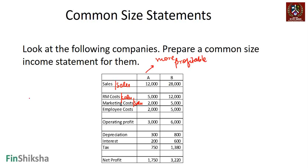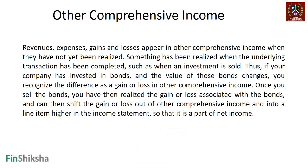All you need to do is take each line item and divide it by the sales number to get a common size statement in percentage terms. You'll probably need to practice with multiple companies and multiple exercises, but that's the broad crux of how to look at a common size statement. Next, we move to a concept called other comprehensive income, which is a slightly tricky concept.